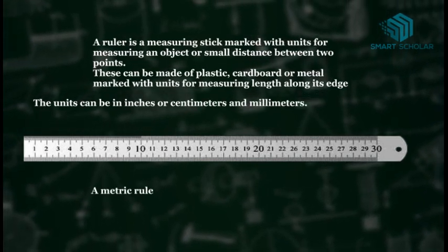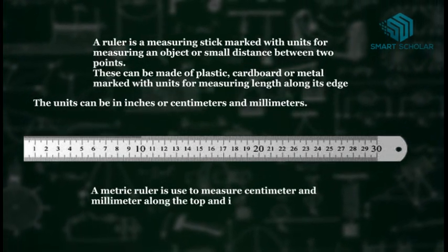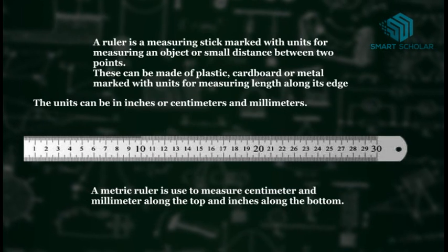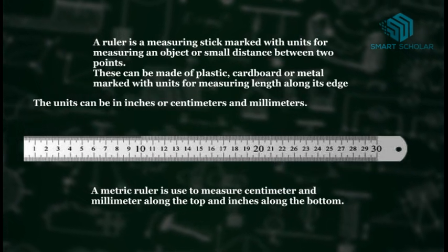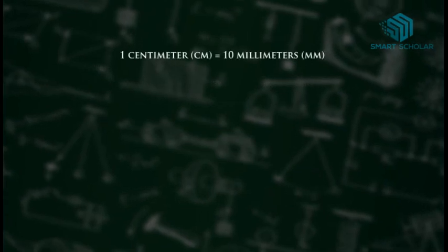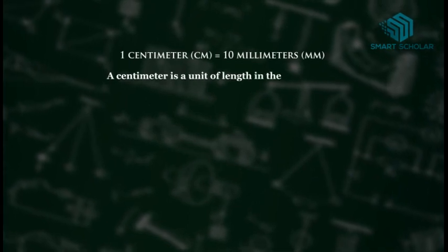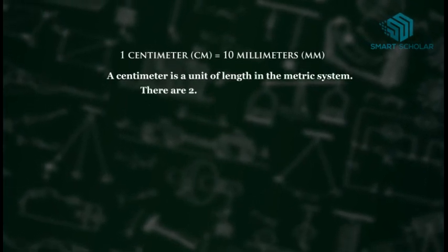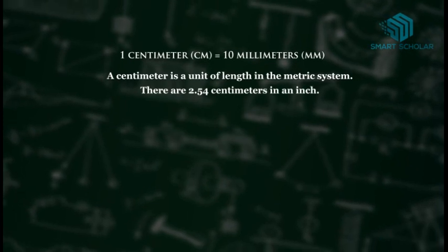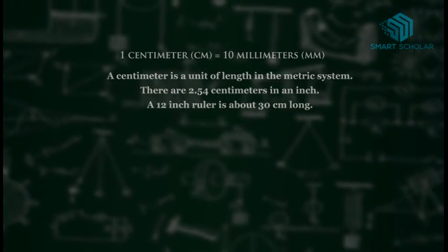A metric ruler is used to measure centimeters and millimeters along the top and inches along the bottom. One centimeter is equal to 10 millimeters. A centimeter is a unit of length in metric system. There are 2.54 centimeters in an inch. A 12 inch ruler is about 30 centimeters long.